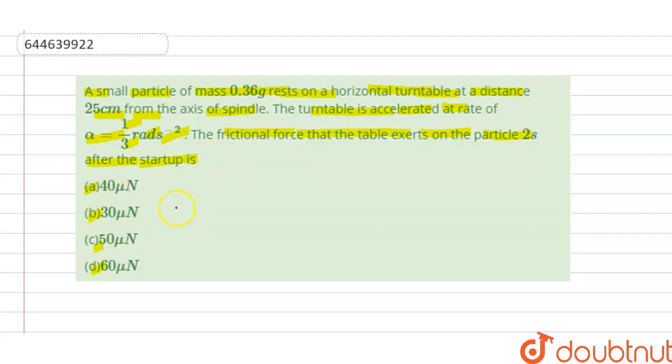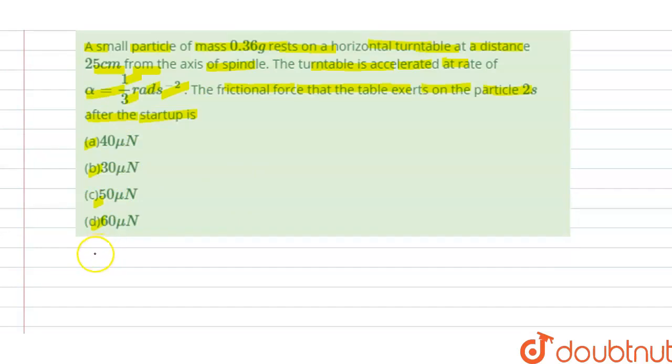So we have options a, b, c, d given here. We have to find the frictional force after 2 seconds. The solution: we have r is 25 centimeter, we can convert it to meter, which is 0.25 mm. And mass is 0.36, if we convert it into kg, this is 0.36 times 10 power minus 3 kg.